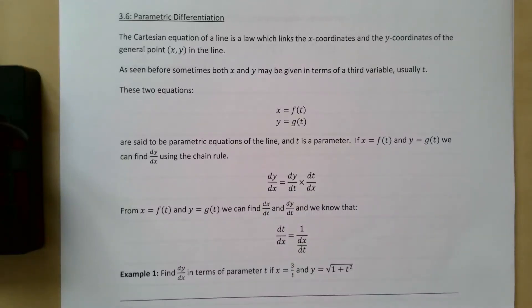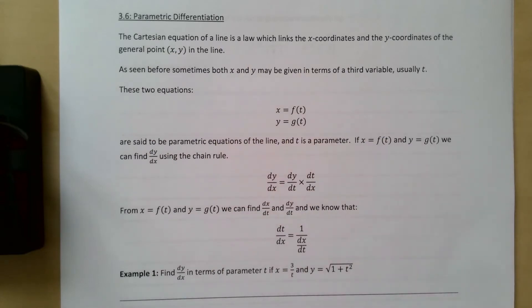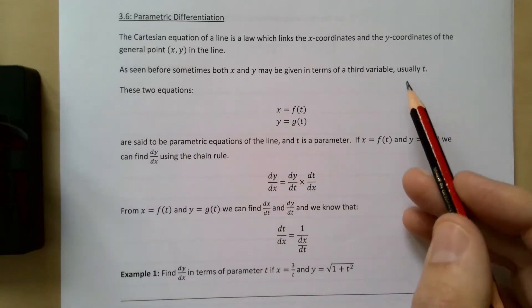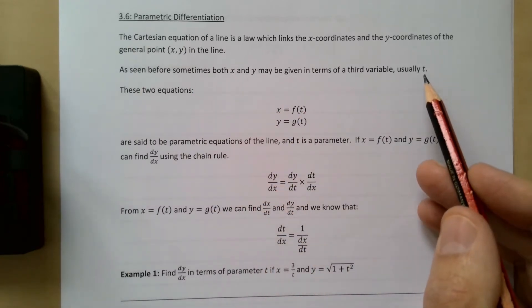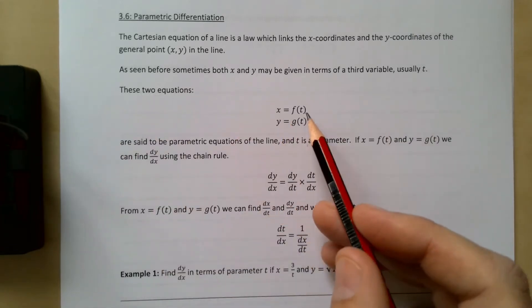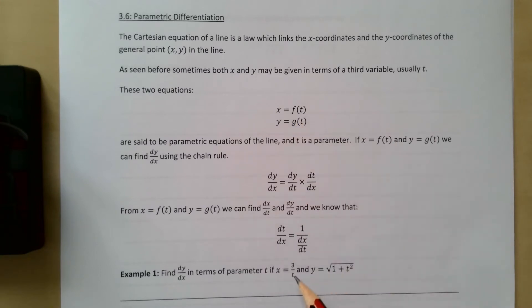This is an A2 pure video on parametric differentiation. Any differentiation we've done before is Cartesian — it's always y as a function of x. Parametric means it is in terms of a third variable, which we normally call t, and sometimes theta. So the two equations are x as a function of t and y as a function of t — for example, x equals three over t, or y equals the square root of one plus t squared.